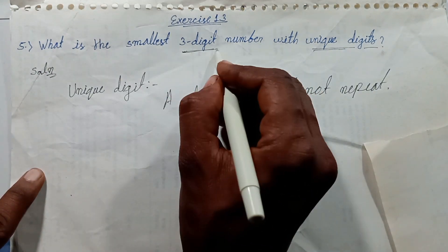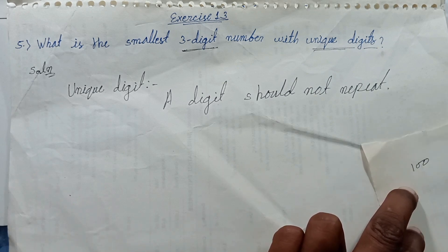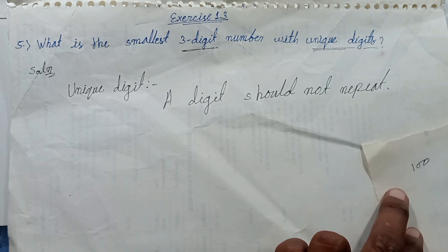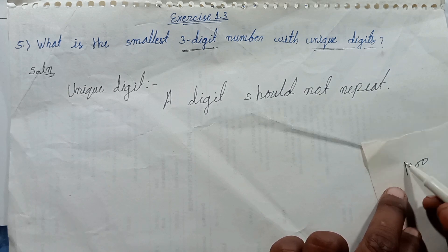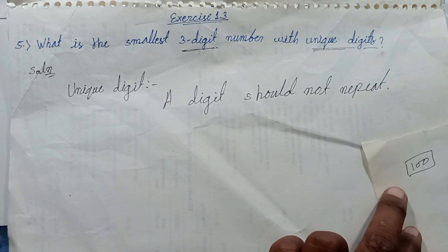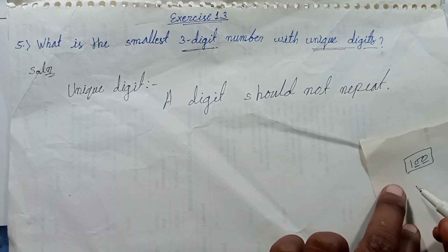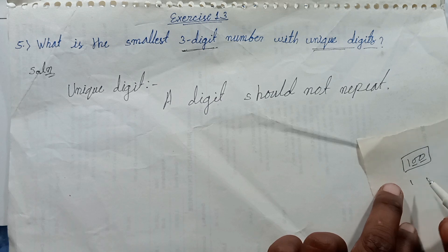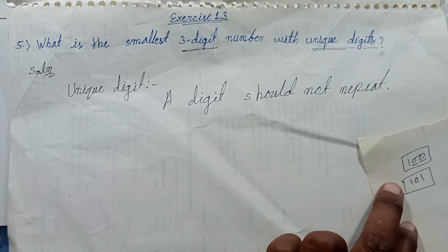In the rough side, the nearest smallest 3-digit number is 100. However, in 100, the digit 0 is repeated two times. The next number is 101, but in 101, the digit 1 is repeated two times. So this number is also not valid.